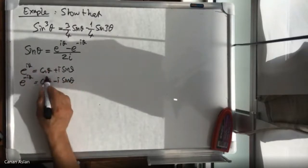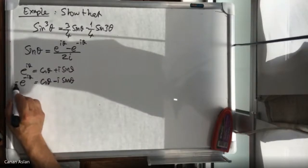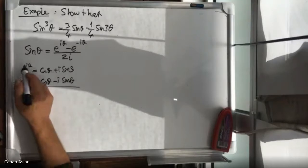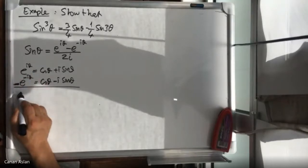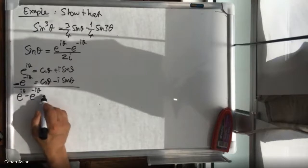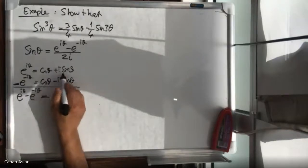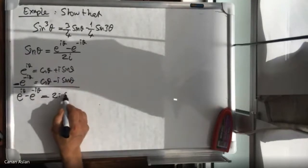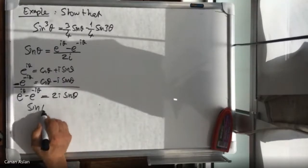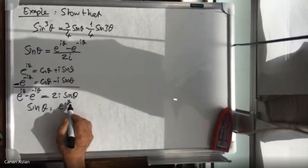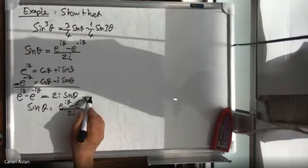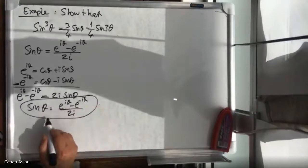Since I'm solving for sine theta I need to get rid of the cosine terms, so I subtract the second equation from the first. The subtraction gives e to the i theta minus e to the minus i theta on the left, which equals two i sine theta. Dividing both sides by two i gives sine theta equals e to the i theta minus e to the minus i theta divided by two i.